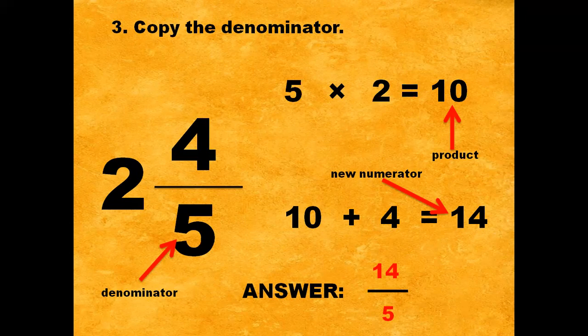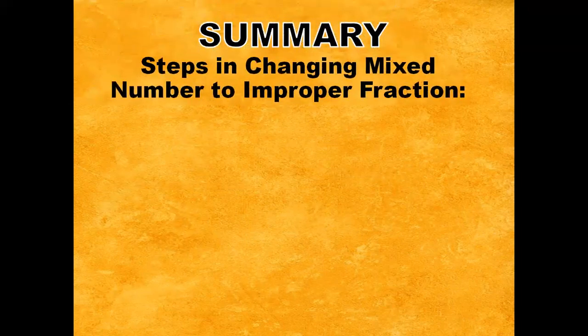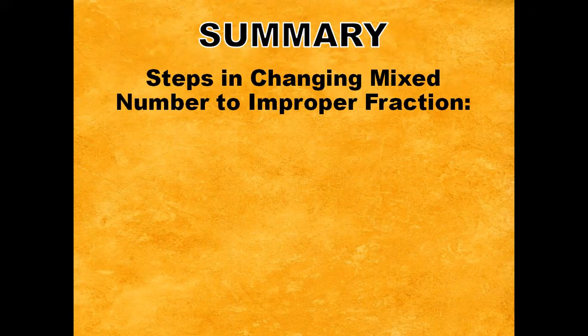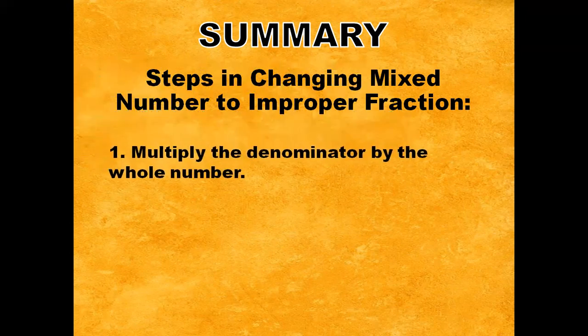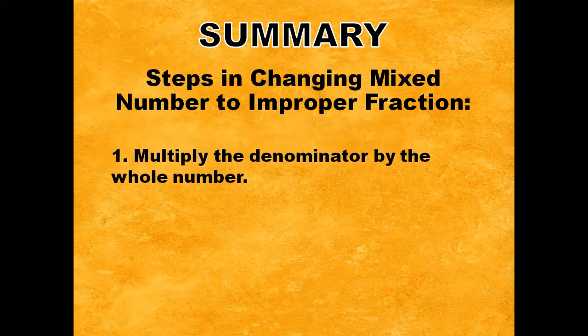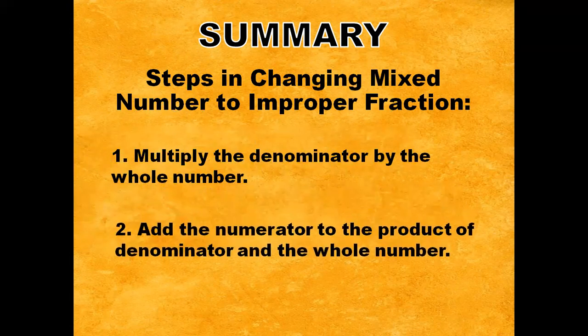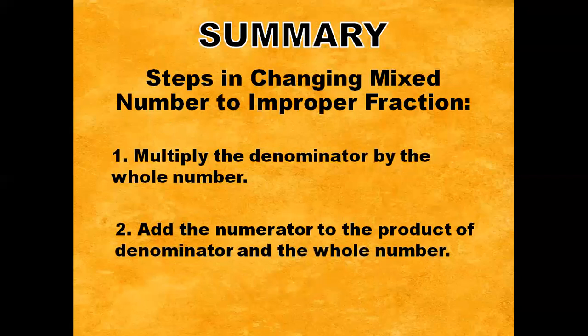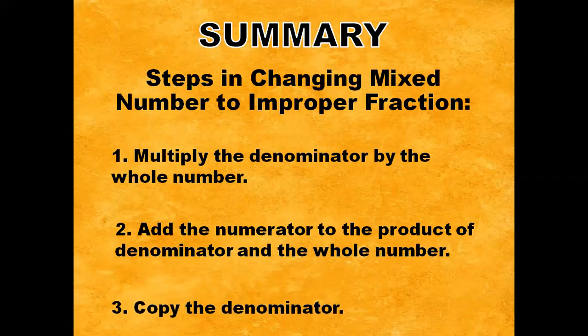I hope you understand how to change a mixed number to an improper fraction. Always remember the steps: number one, multiply the denominator by the whole number; step number two, add the numerator to the product of the denominator and the whole number; and step number three, copy the denominator.